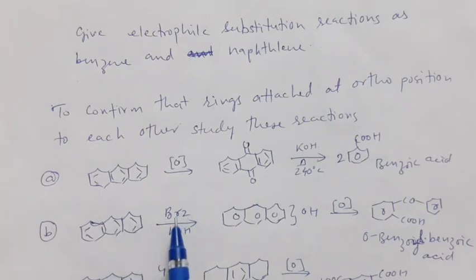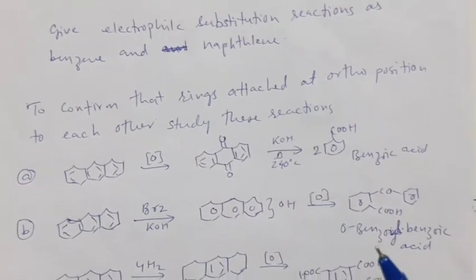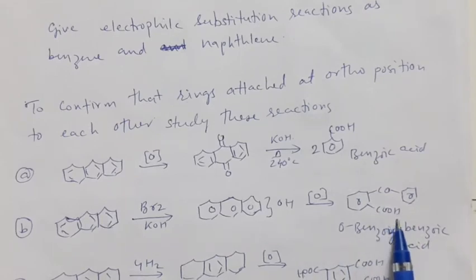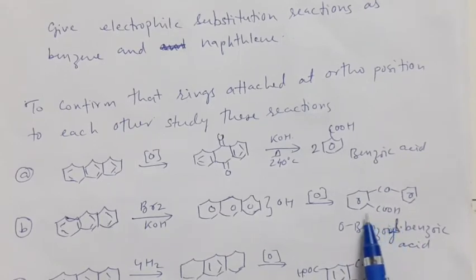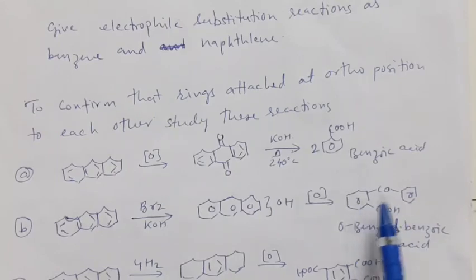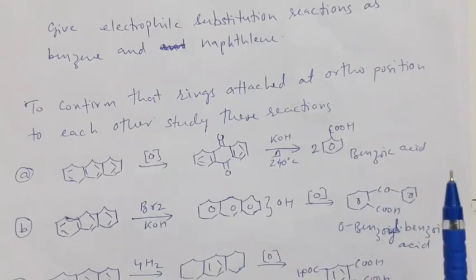Another reaction is anthraquinone in the presence of bromine. This reaction gives hydroxy anthracene which on oxidation gives benzoyl benzoic acid. This reaction gives an aromatic acid. The formation of benzoyl benzoic acid shows that the 2 rings at the ends are aromatic rings.